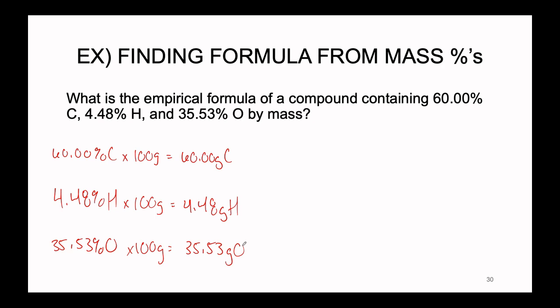And this is going to allow us to drop the unit of the percent and insert the unit of the gram. So we're actually working with 60.00 grams of carbon, 4.48 grams of hydrogen, and 35.53 grams oxygen. All right, so that's step number one, right, get out of the percent and into the gram.